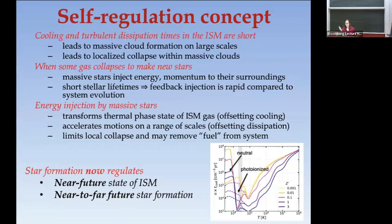Cooling and turbulent dissipation lead to cloud formation on large scales, and within those clouds to localized collapse to make stars. When gas collapses to make stars, you get the return of energy and momentum — feedback. Key is that the lifetimes of the stars that do most of the essential feedback are quite short, around 10–30 million years, so the injection of feedback is rapid compared to the evolution timescale. A lot of it is stellar evolution, but stellar evolution is relatively short.